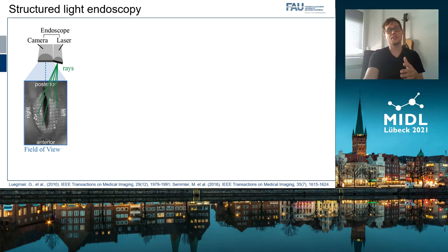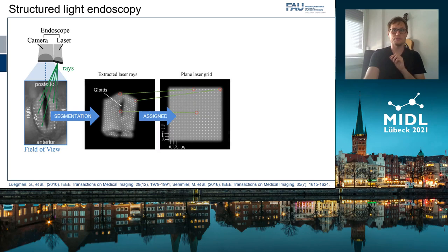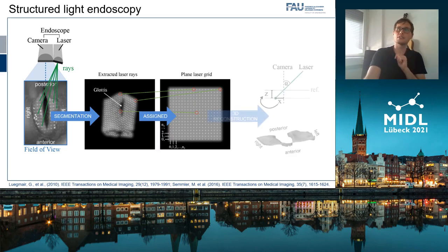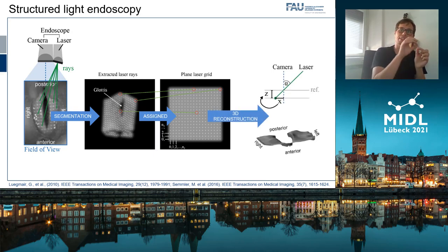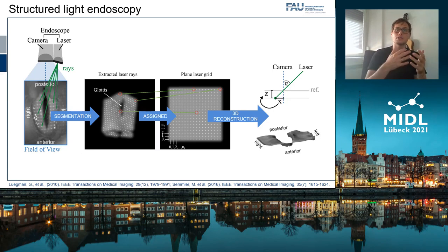For 3D reconstruction, the first thing we are doing is actually segmenting the laser rays, and then each laser ray is assigned to its ideal position in the reference grid. With this information we are capable of reconstructing the 3D surface of the vocal folds, because we know the distance from the laser ray point to its reference position and can then compute the depth information. Commonly we are using manual annotations to do this, and we are looking for a method that allows a fully automatic assignment.